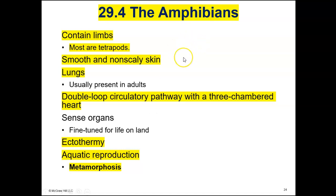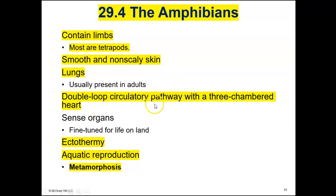Then we have amphibians, which evolved from the lobe-finned fishes. Amphibians are tetrapods for the most part, meaning they have four limbs. They have smooth, non-scaly skin. They breathe with lungs, but their lungs are reduced, so amphibians must also supplement their breathing through their skin. They have a double-loop circulatory pathway with a three-chambered heart.